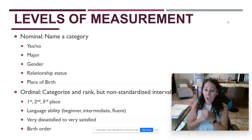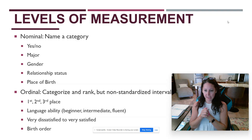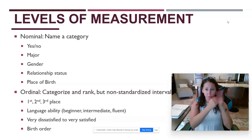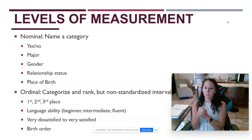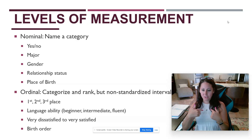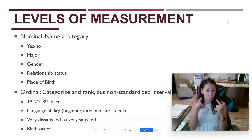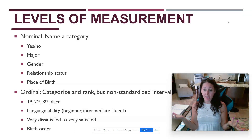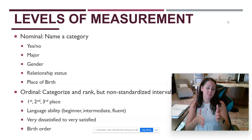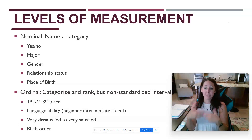A similar example is language ability. I can rank someone as a fluent, intermediate, or beginner language speaker and provide definitions for each on the survey. But that's not a standardized interval — I can't say someone who is fluent knows approximately 3,000 more words than someone intermediate, who knows 3,000 more words than a beginner. You also see ordinal scales in things like 'very dissatisfied to very satisfied' or 'strongly disagree to strongly agree.' You can't assume everyone interprets those intervals the same way.